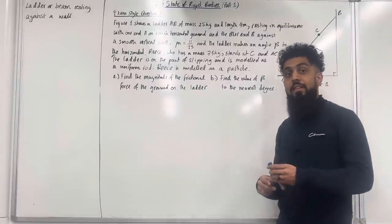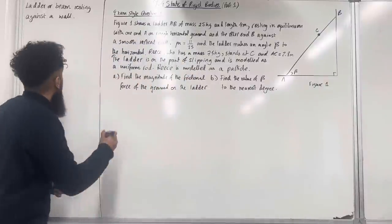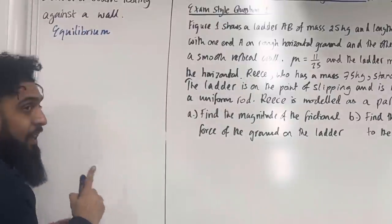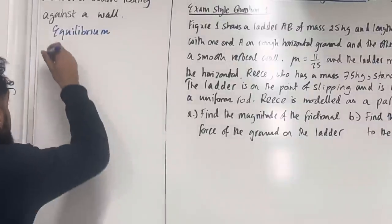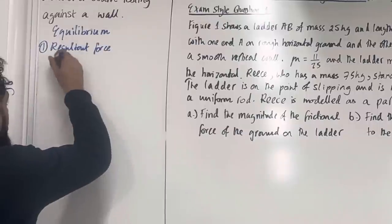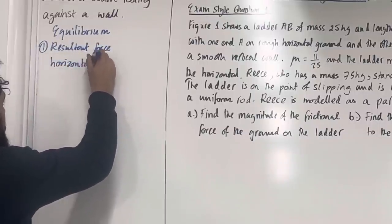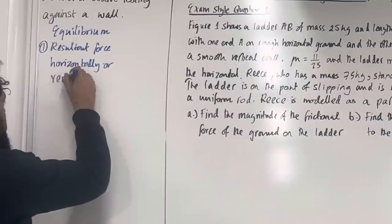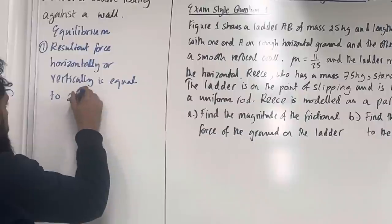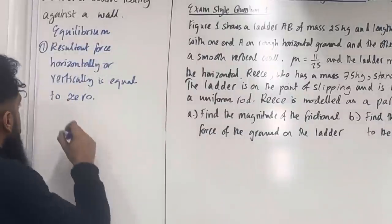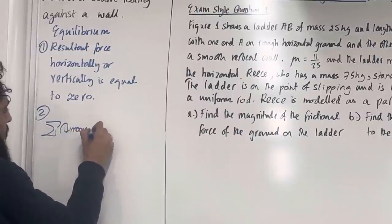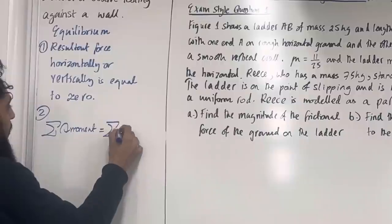So what we have here is an equilibrium problem. This implies that two conditions are satisfied. The first condition: resultant force horizontally or vertically is equal to zero. Second condition: the sum of clockwise moments is equal to the sum of anticlockwise moments.